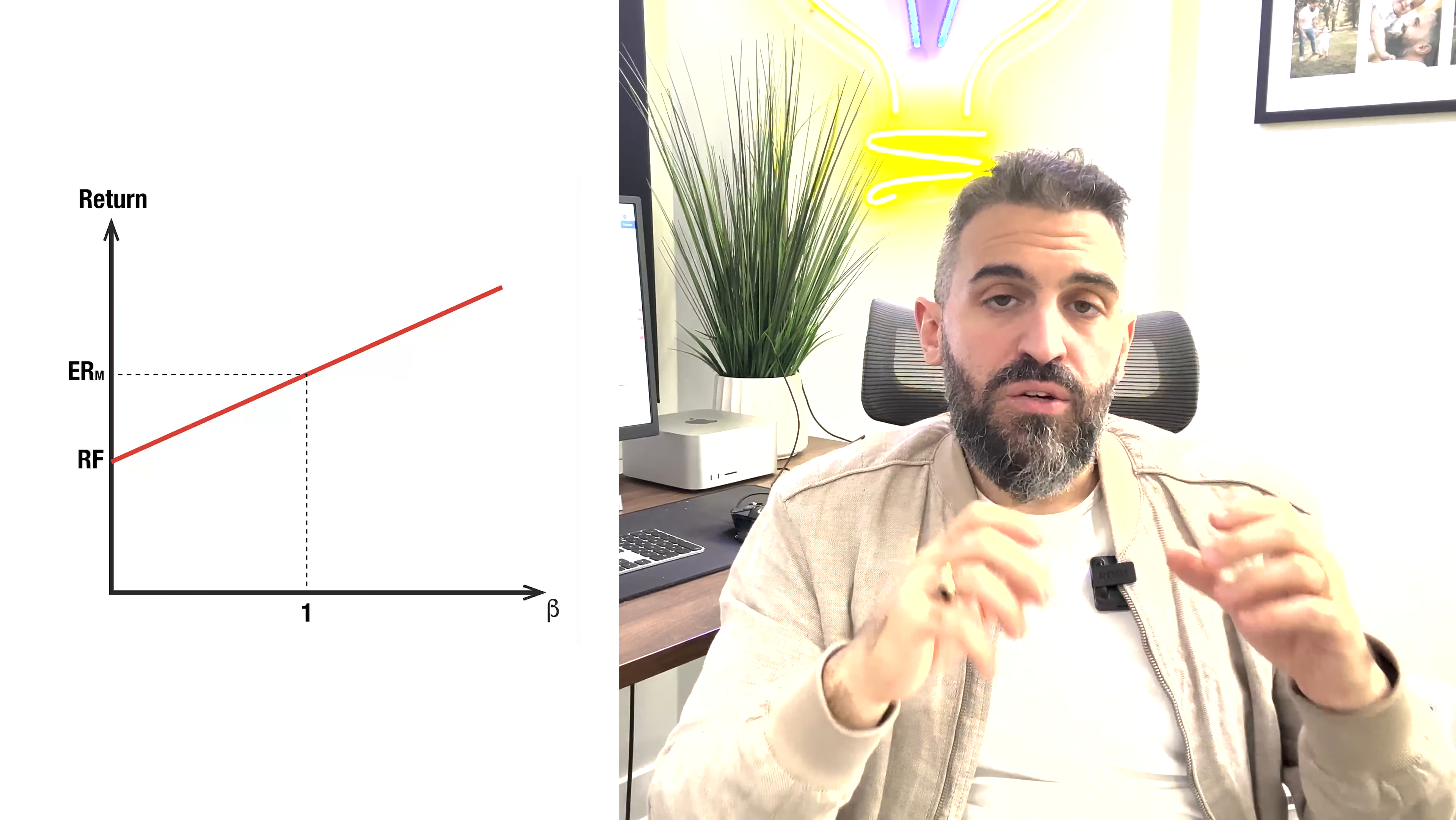And this line that is created shows us every required return that we should earn given the amount of risk. So depending on how much risk the stock has, there is a corresponding return that it should earn. The way to calculate that is using the CAPM formula: simply taking the risk-free rate plus the market risk premium, which is also the slope of this line, multiplied by the stock's beta.